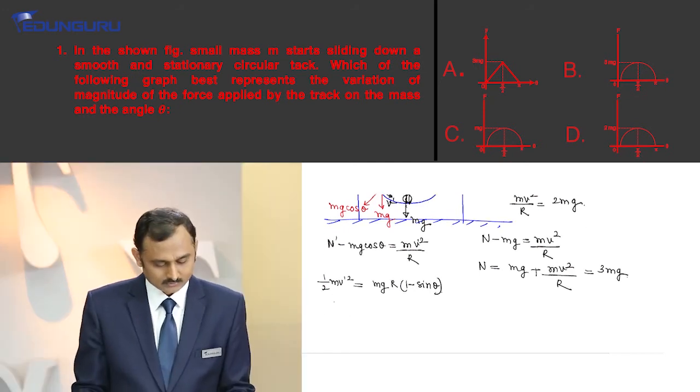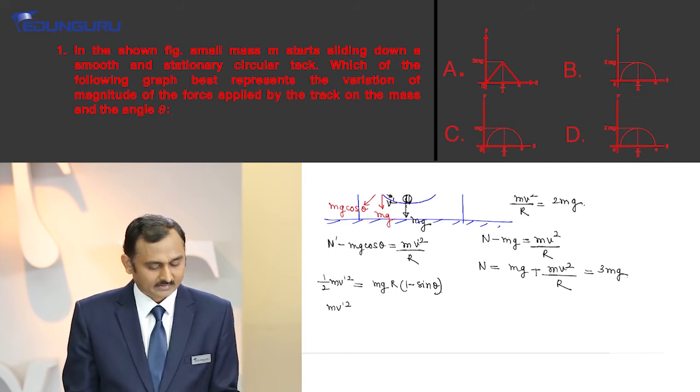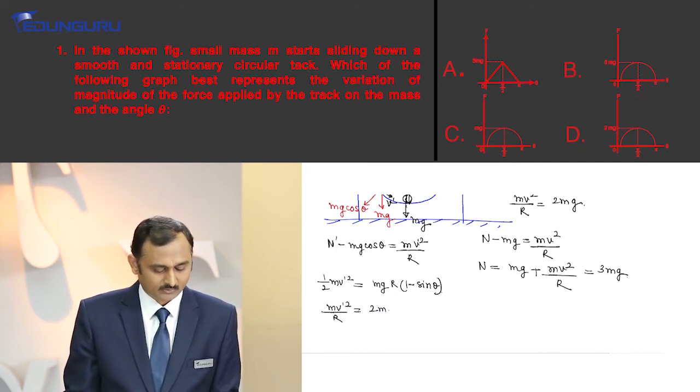So mv squared by r equals 2mg times 1 minus sin theta.